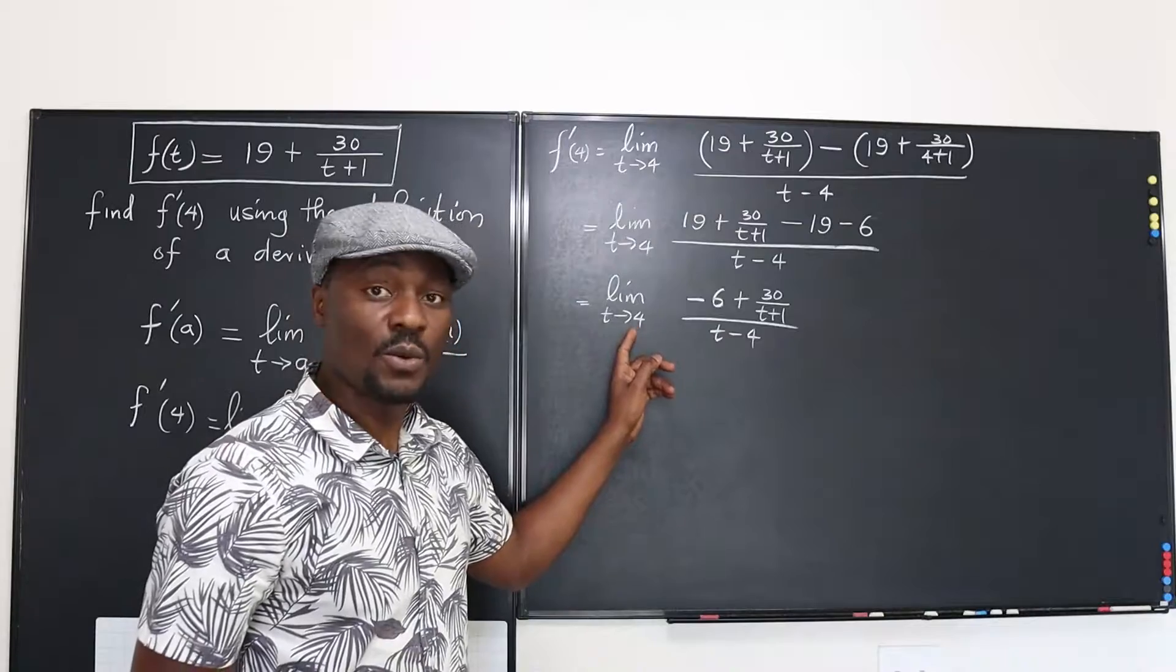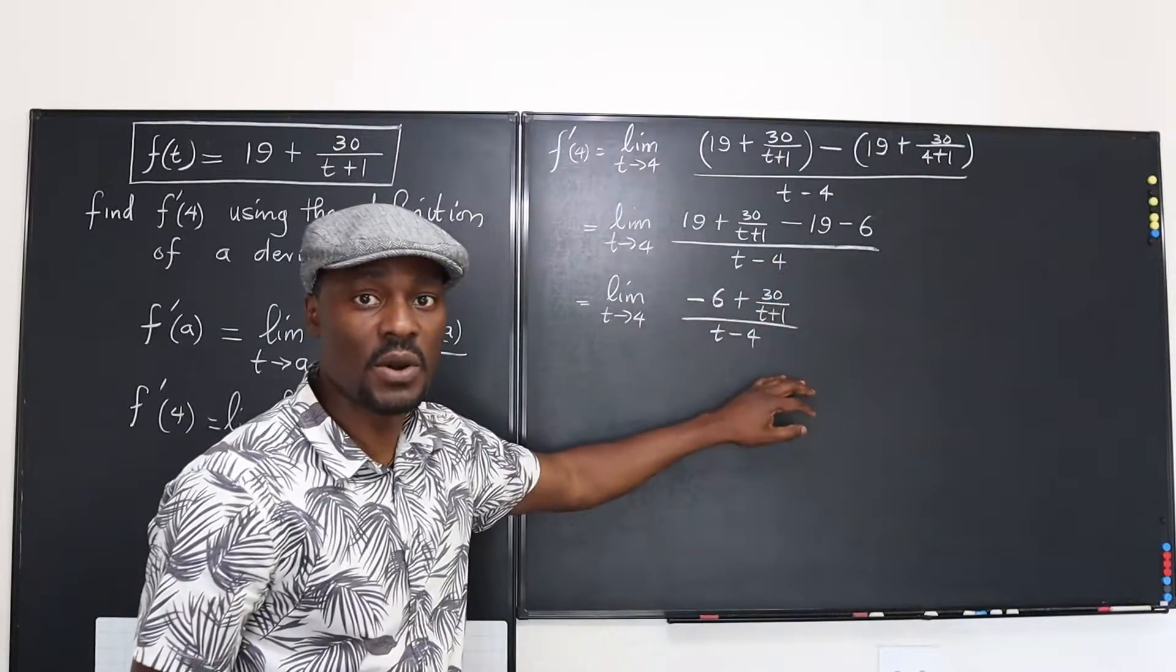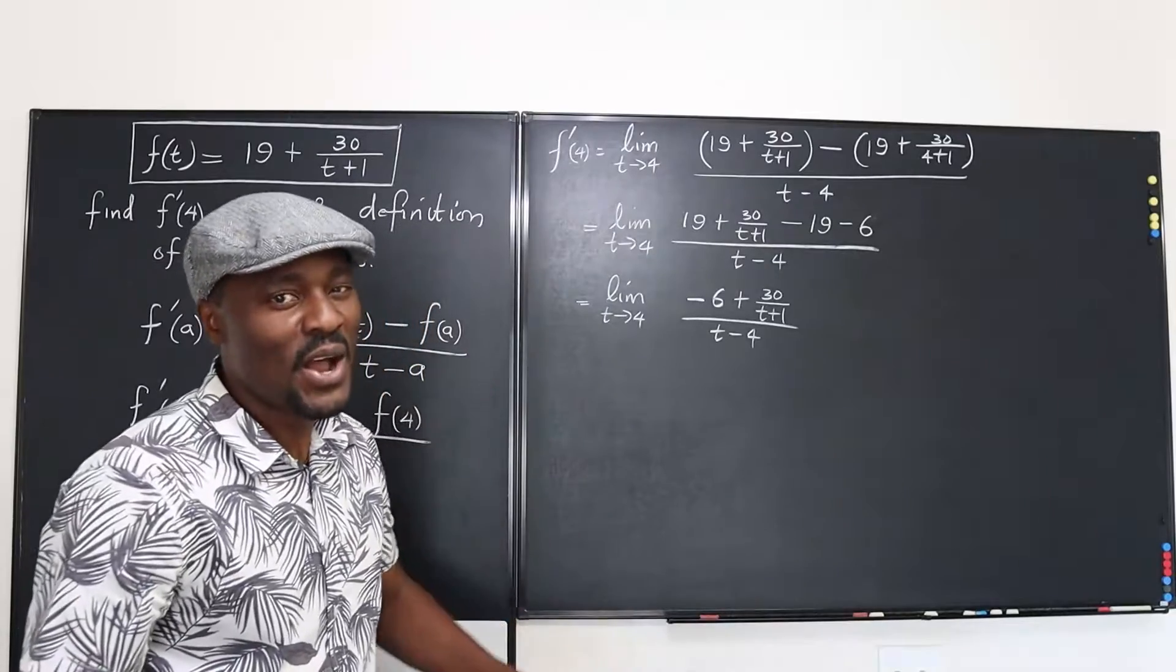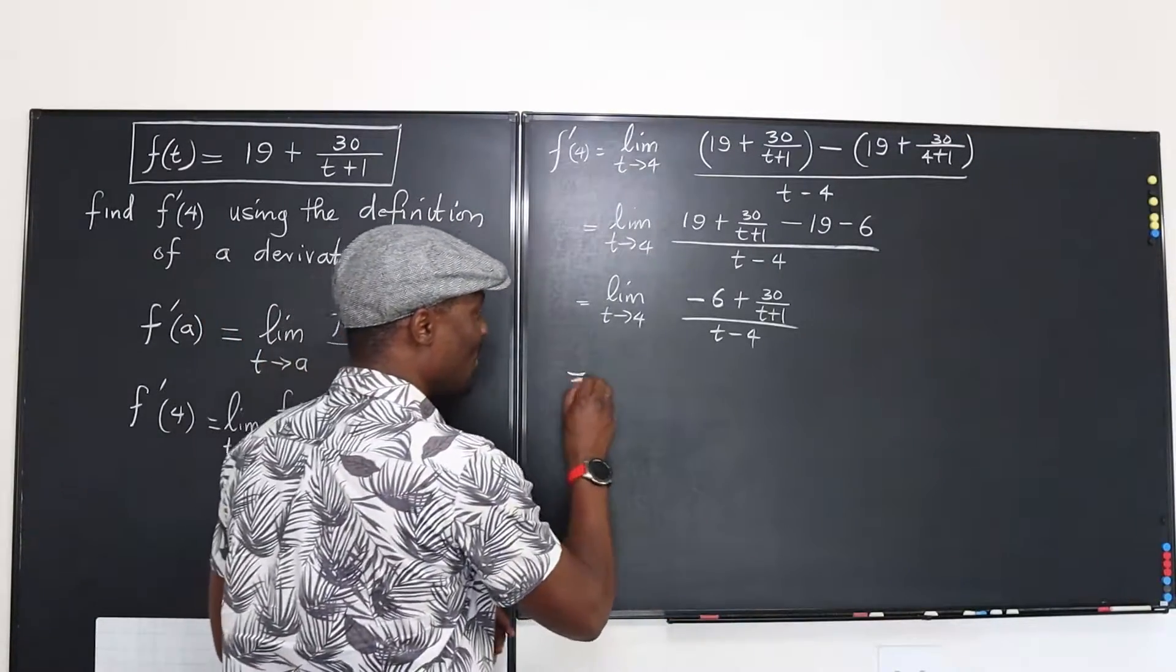Because if you plug in t equals 4 right now, what's going to happen is you'll get a zero on top and zero under. That means you still have some algebraic manipulations to do. So let's not do that yet. Let's go to the next stage.